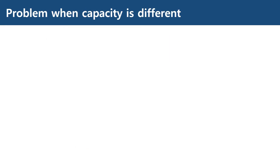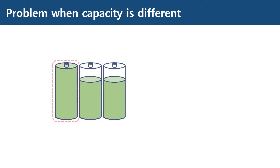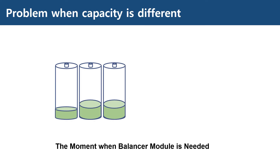A problem occurs when the charge status or the capacity of each cell are different. As an example, let's assume these cells are connected to a BMS, with the first cell having a slightly lower capacity than others. When we charge these cells, the charge will be terminated as soon as the first cell reaches full capacity, leaving the other cells without being fully charged. When we discharge, the first cell will be discharged faster than the other two cells until discharge is terminated by the BMS. This is when we need a balancer module.